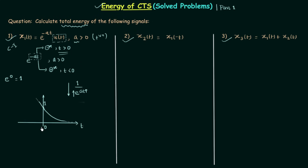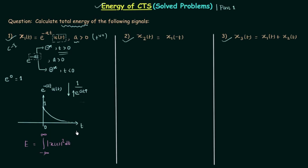From minus infinity to 0, multiplying u(t) with e raised to power minus at gives 0. So e raised to power minus at times u(t) is 0 from minus infinity to 0, and remains the same from 0 to infinity since multiplying by 1 does not change the signal. This is the final waveform.